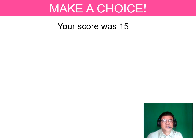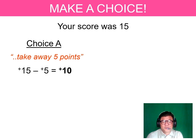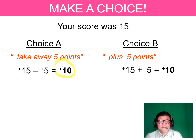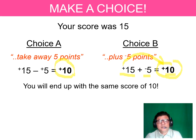Now let's look at your choices. For example, suppose you violated the rule — you were talking during the test — and your score was 15. Choice A: take away five points. That's 15 minus 5, which equals positive 10. Choice B: 15 plus negative 5. Adding a positive and a negative — subtract the absolute values, take the sign of the bigger absolute value — and you also get positive 10. The results are the same!